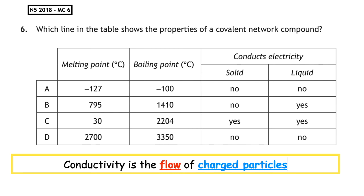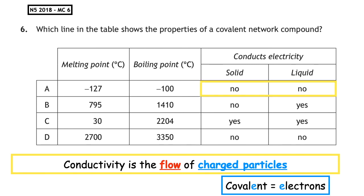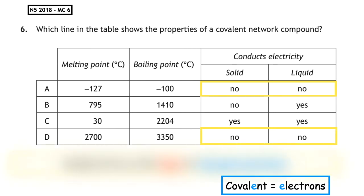Remember, the electrons are fixed in a bond, which means they're unable to move. So at the moment, the only potential answers that a covalent network could be would be A and D.